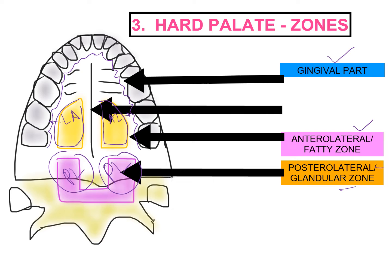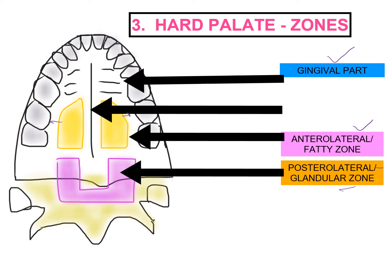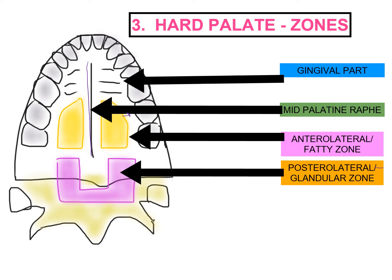The midline of the palate is formed by a line known as the mid-palatine raphe. So these are the four parts: gingival, anterolateral zone, posterolateral zone, and mid-palatine raphe. The palatal mucosa is a thick mucosa.